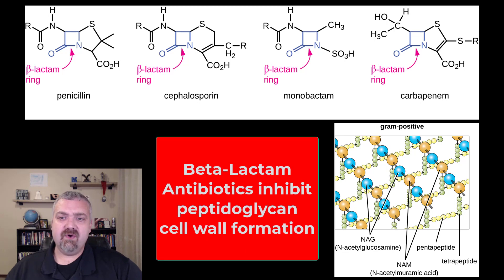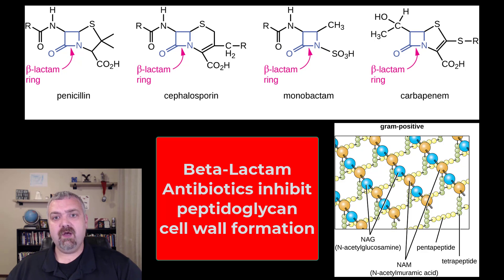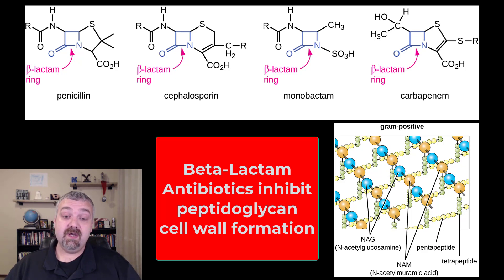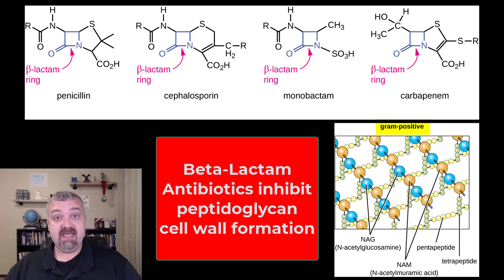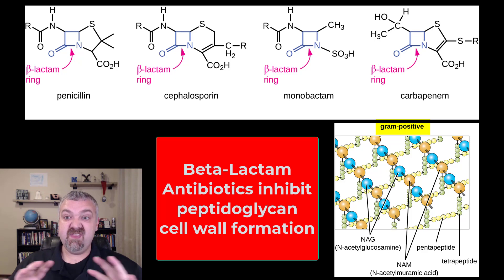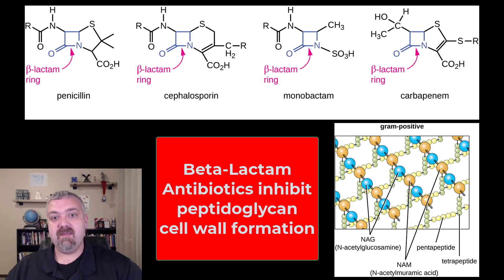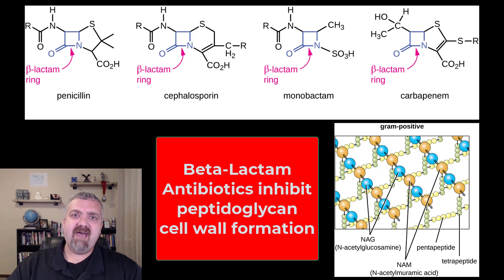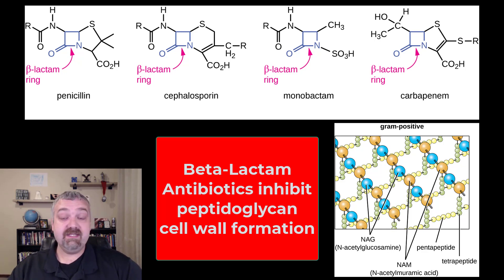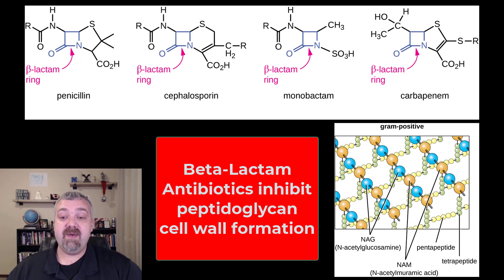The reason I have these all clustered together is that these are going to be your cell wall inhibitors — they inhibit the production of the cell wall. The first thing you should think of whenever you think of a cell wall inhibitor is that these are going to be way more effective against gram-positive bacteria than gram-negative. That's because gram-positive bacteria's big thick cell wall is their primary defense, whereas gram-negative bacteria have an outer membrane outside of their cell wall.